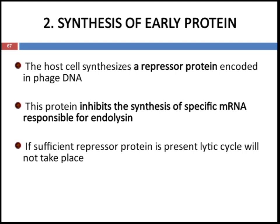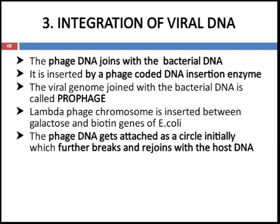The second step is synthesis of early proteins. The host cell synthesizes repressor protein coded for by the phage DNA. This protein inhibits the synthesis of specific mRNA responsible for endolysin, which is the main enzyme responsible for lysis of the bacterial cell. So endolysin production is inhibited by the repressor protein. If sufficient repressor protein is present, the lytic cycle will not take place.